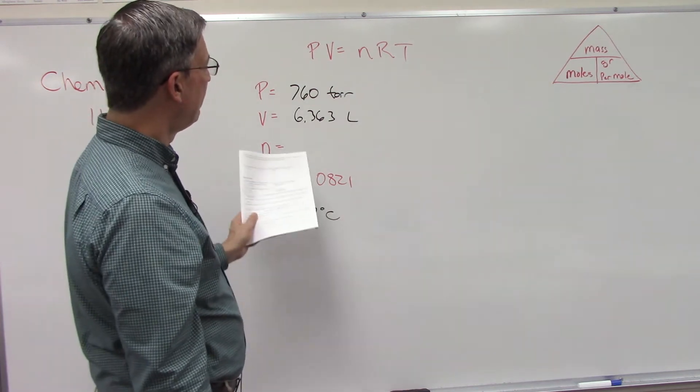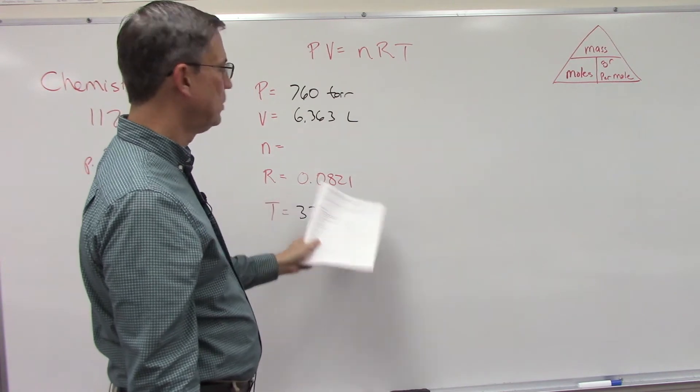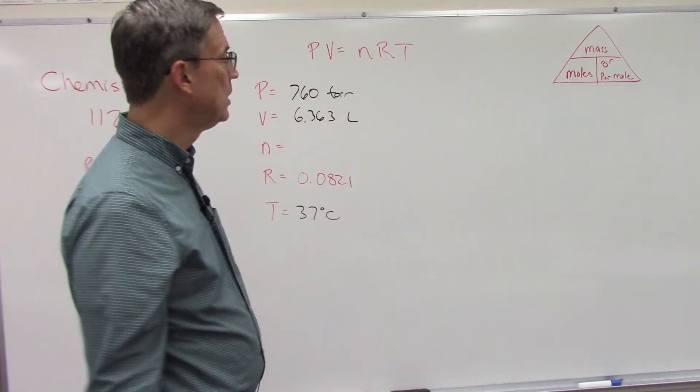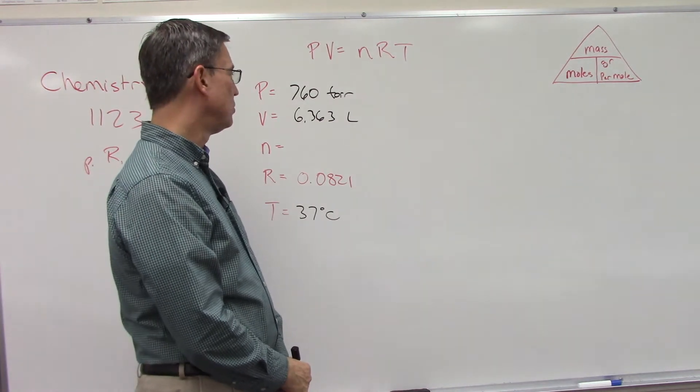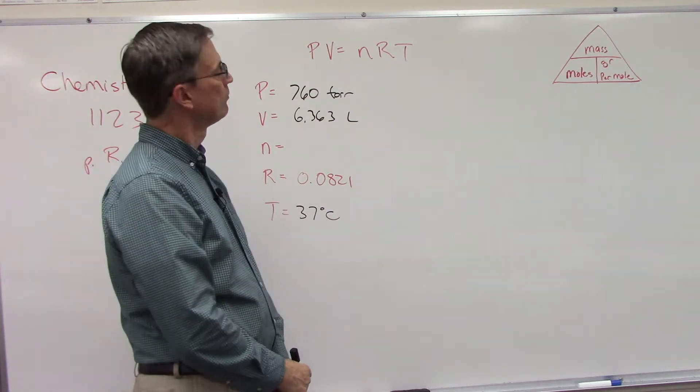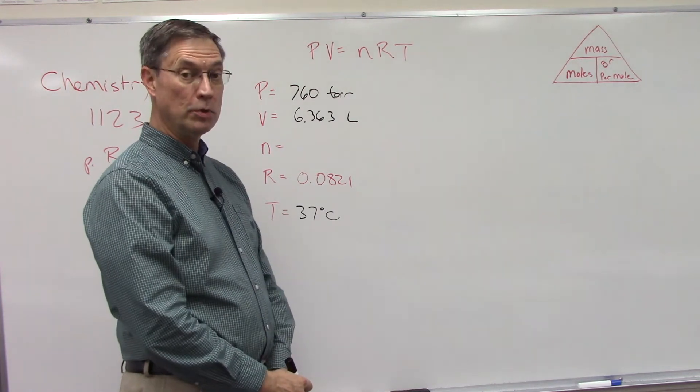But first of all, obviously this 0.0821—that number is a constant, it doesn't change—but we need to make sure that we have it in the correct units. There's two things we need to adjust. We need to do a conversion. Do you know which two of those would be?